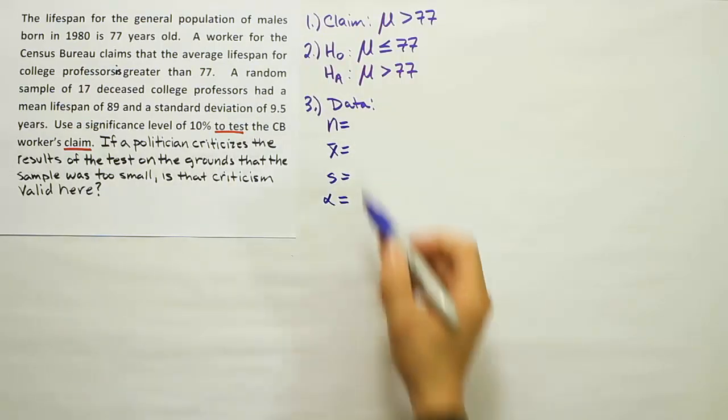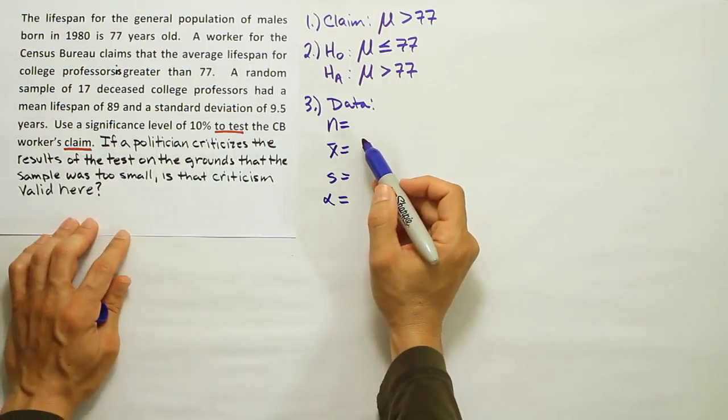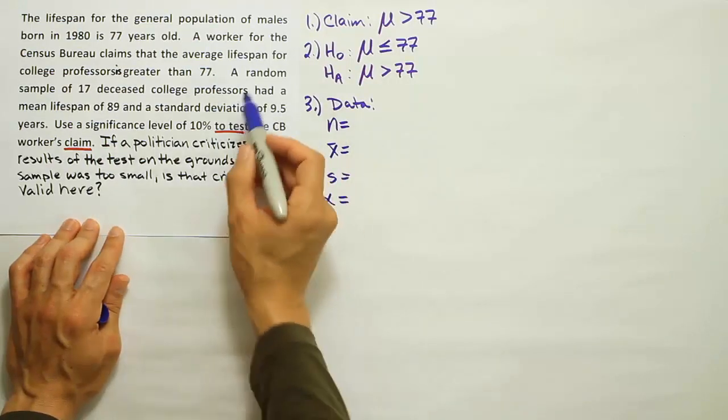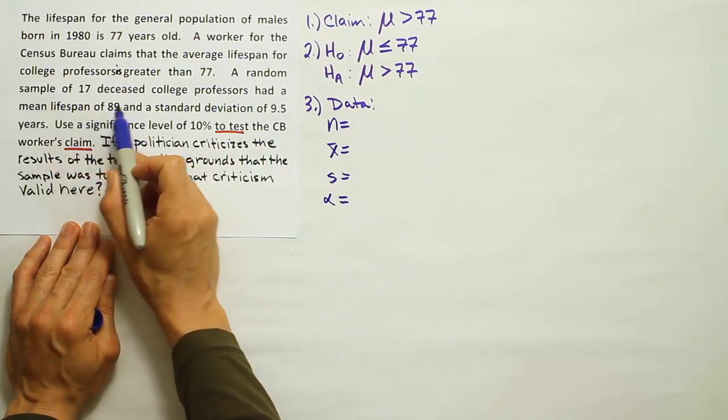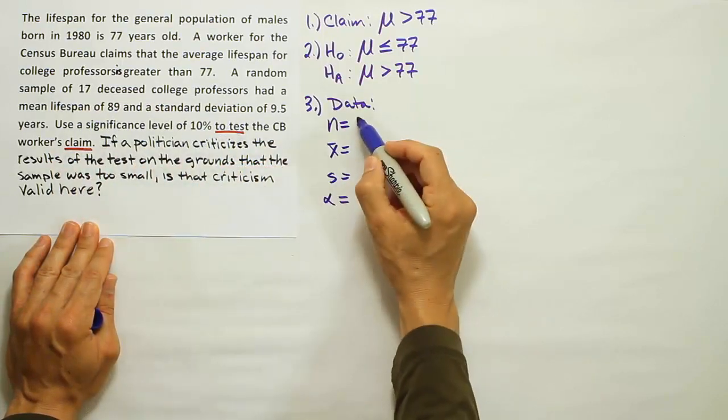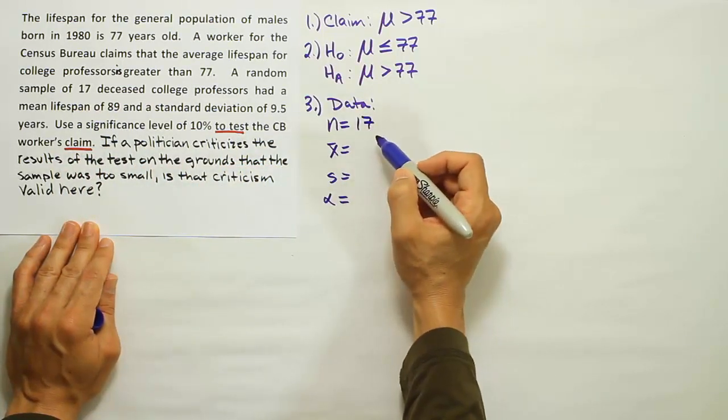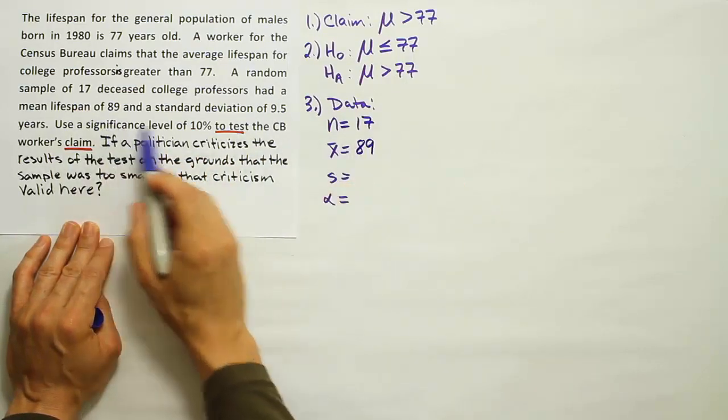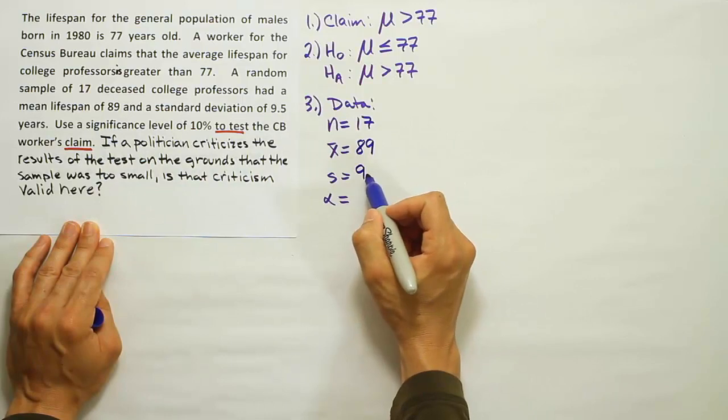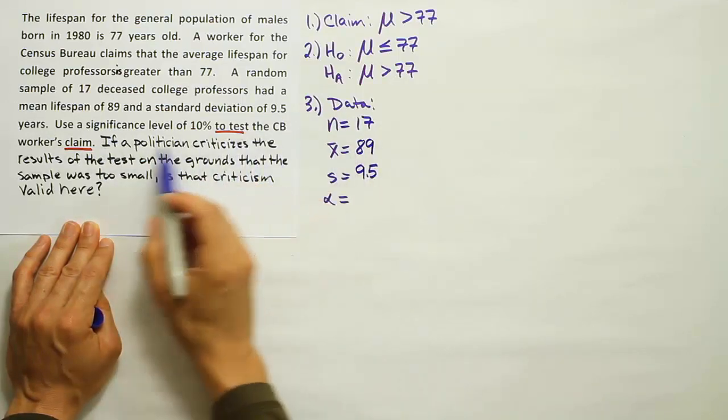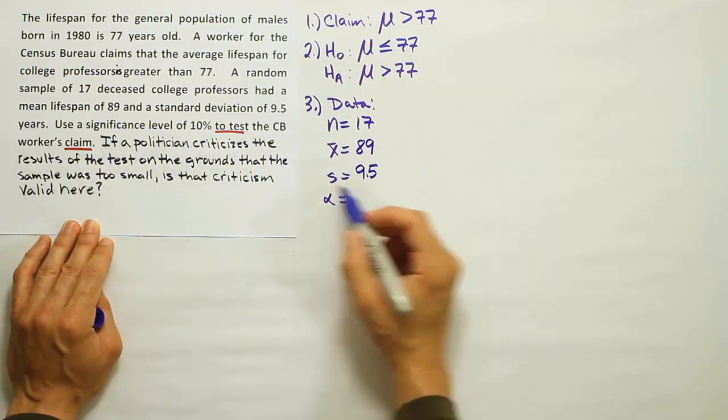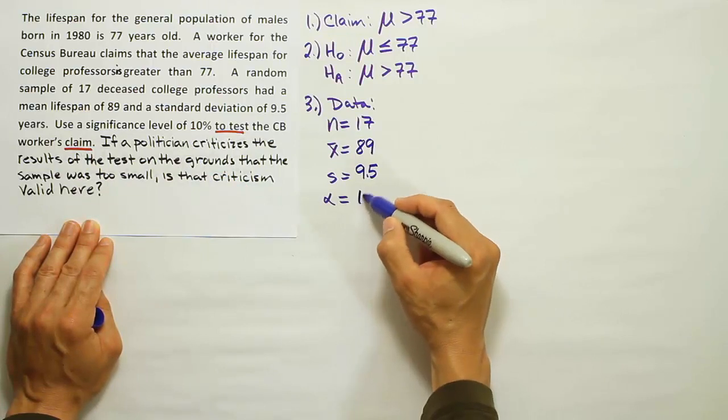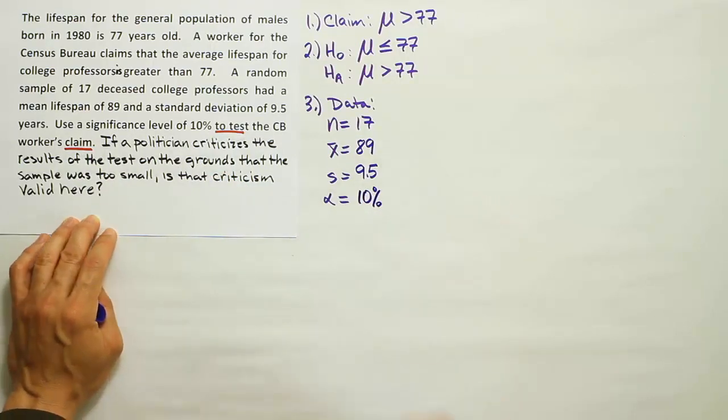A random sample of 17 deceased college professors, so n is 17, that's our sample size. They had a mean lifespan of 89, and a standard deviation of 9.5. Then use the significance level to test the claim, 10% significance level. So we're going to use 10% here for alpha.